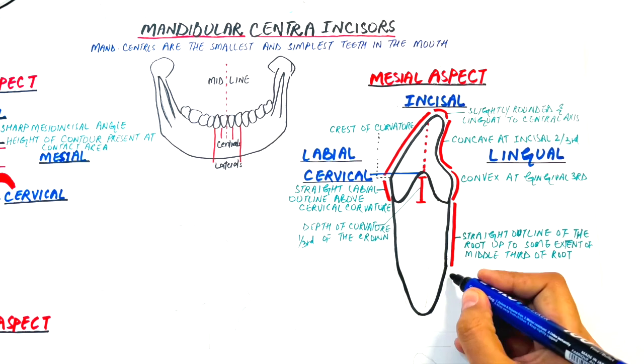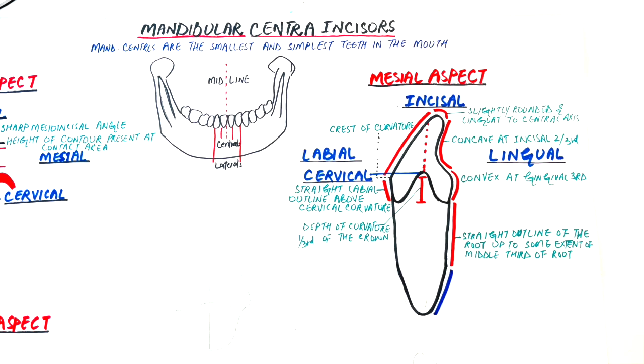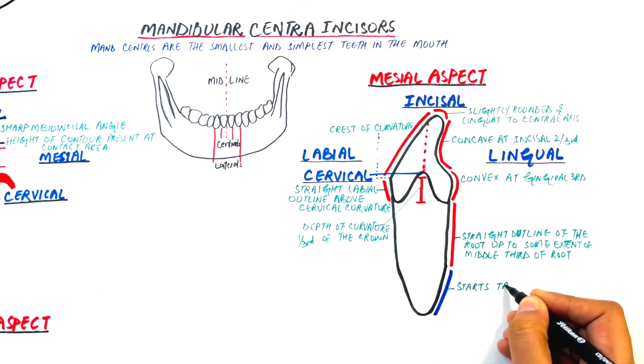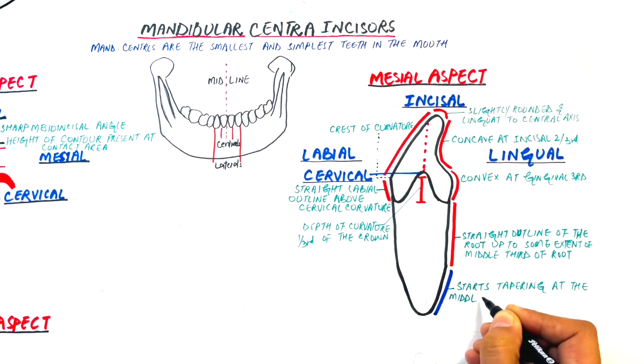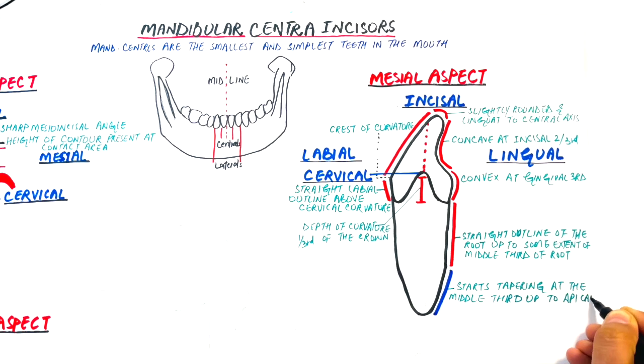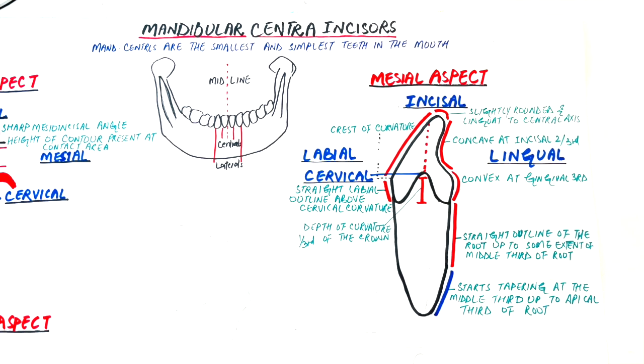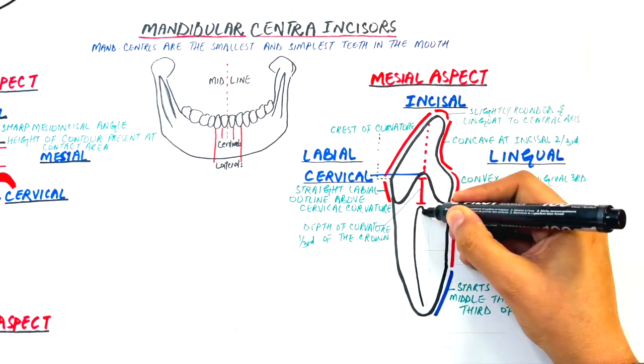The outline of the root then begins to taper in the middle third of the root up to the apical third of the root and ends as a blunt or pointed root apex. The mesial surface of the root has a developmental depression at almost the entire length of the root.